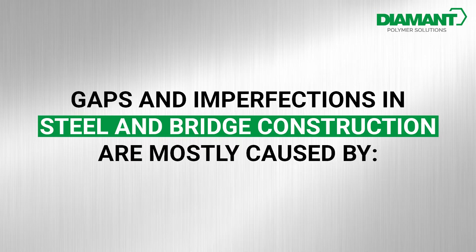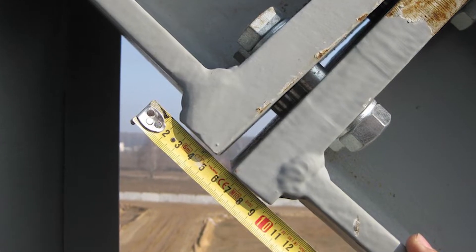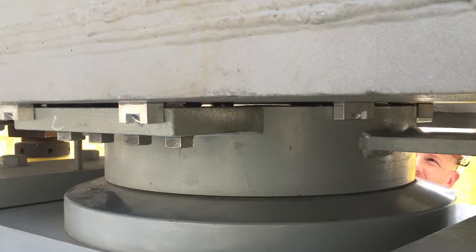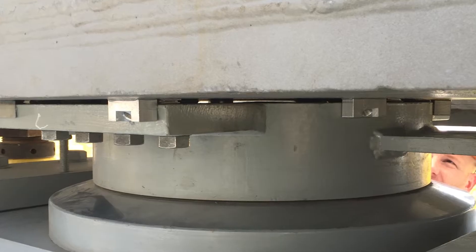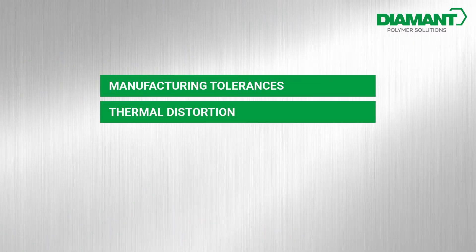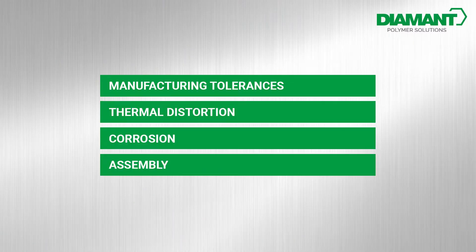In steel and bridge construction, gaps and imperfections are unfortunately not uncommon. These can be due to various reasons and causes, such as production-related tolerances, thermal distortion, corrosion, or assembly errors.